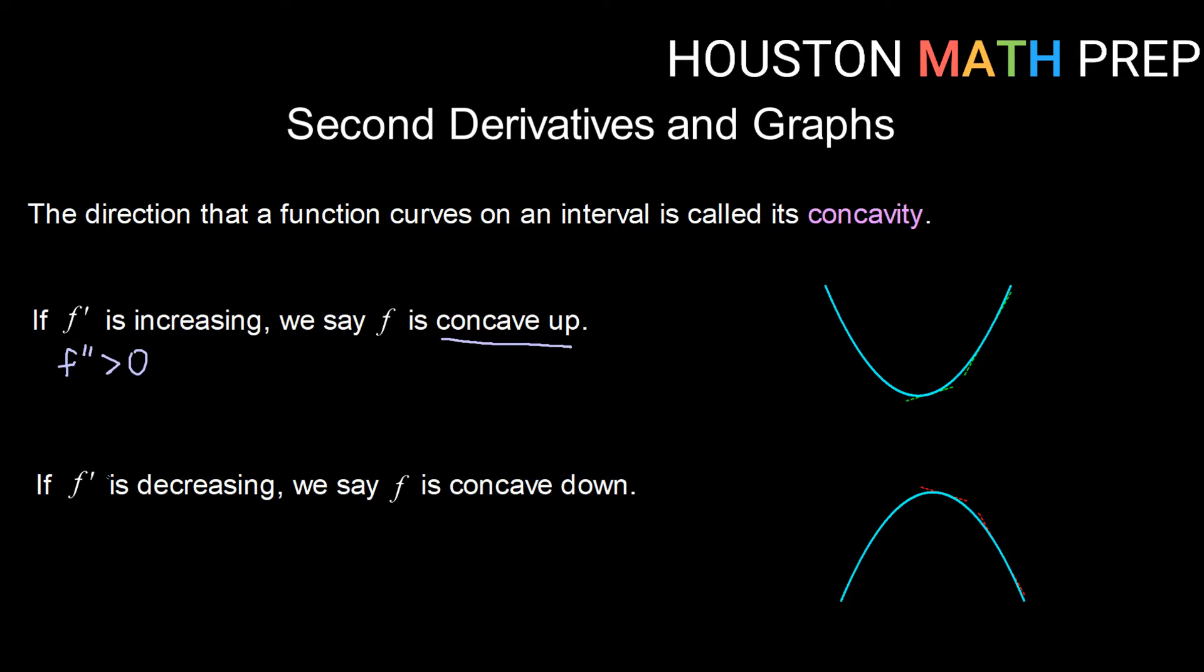The opposite of that, if f prime is decreasing, or using that same logic, if f double prime is less than zero or negative, then we can say f is concave down. Concave down kind of looks like a frown. So concave up looks like a cup, f double prime positive.